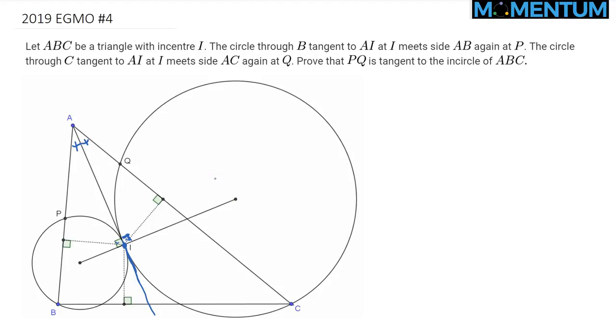Given that, show that PQ, this segment PQ, is tangent to the incircle of triangle ABC. Well, what I did is I dropped the three perpendiculars from the incenter to the three sides of the triangle. So the incircle will go through those three points.